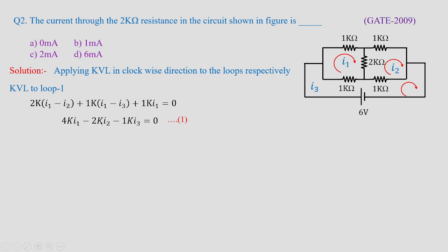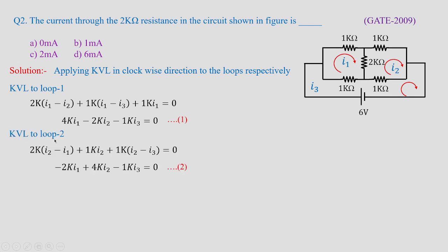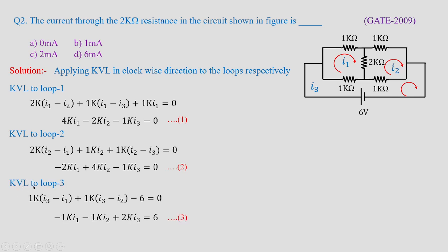Applying KVL to Loop 1: 4k·I1 − 2k·I2 − 1k·I3 = 0, which gives 4000·I1 − 2000·I2 − 1000·I3 = 0, thereby framing Equation 1. Applying KVL to Loop 2 with resistors 1kΩ, 2kΩ, 1kΩ: −2000·I1 + 4000·I2 − 1000·I3 = 0. Similarly KVL to Loop 3: −1000·I1 − 1000·I2 + 2000·I3 = 6.